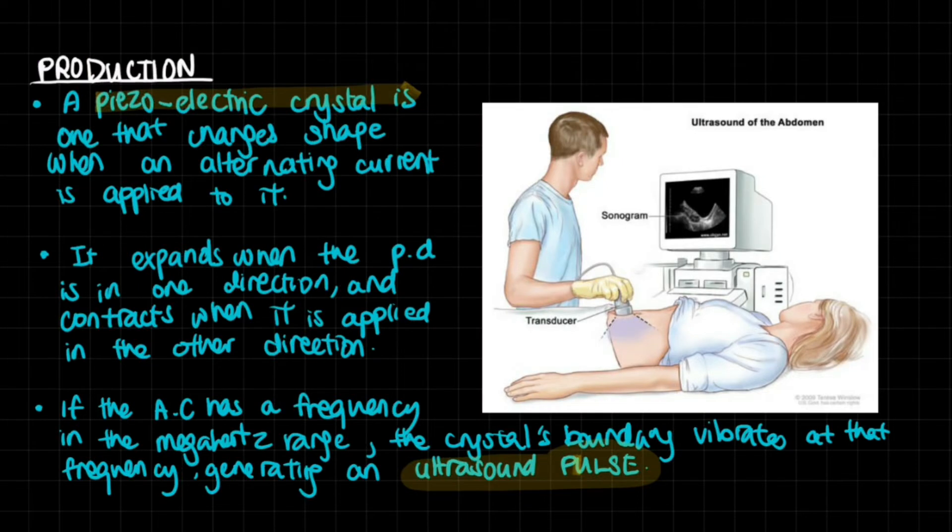How do you produce ultrasound and get this photo? The main character is a piezoelectric crystal - one that changes shape when an alternating current is applied to it. It expands very slightly when the potential difference across it is in one direction. Reverse the potential difference direction and it will contract very slightly. If your alternating current has a frequency in the megahertz range, the crystal will expand and contract at a frequency of a few megahertz - millions of times per second.